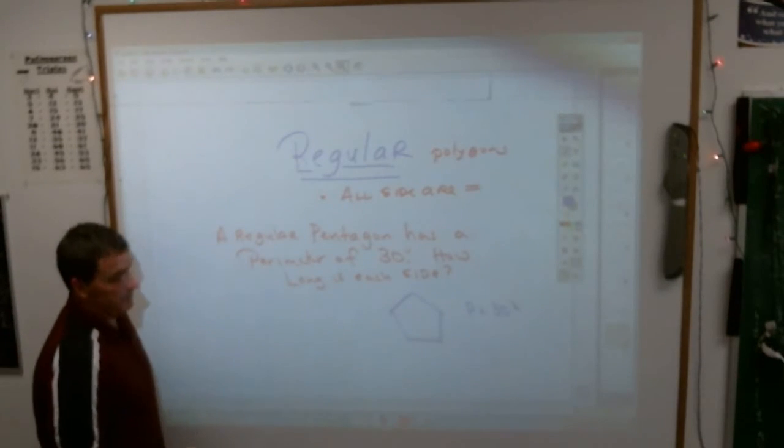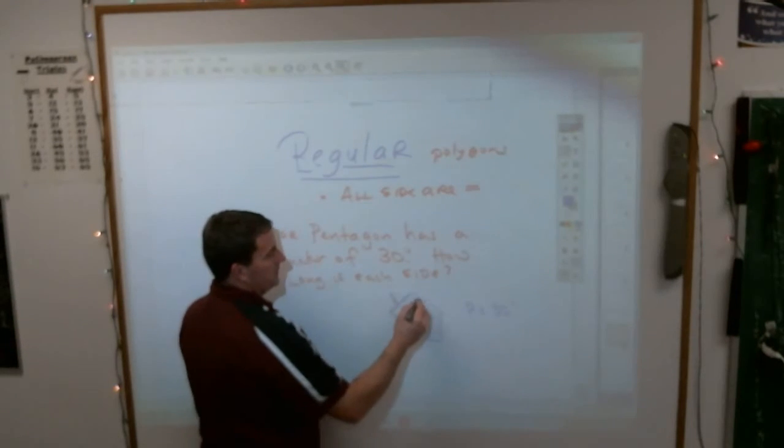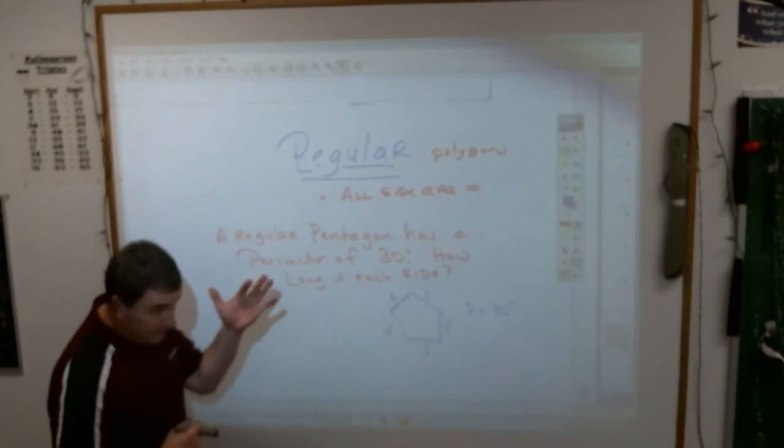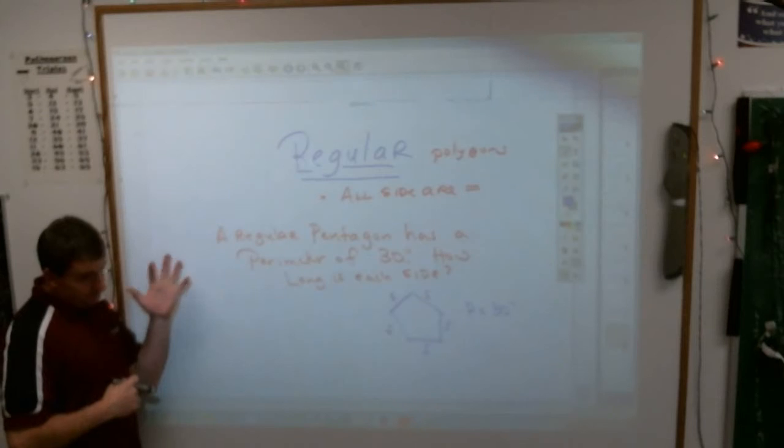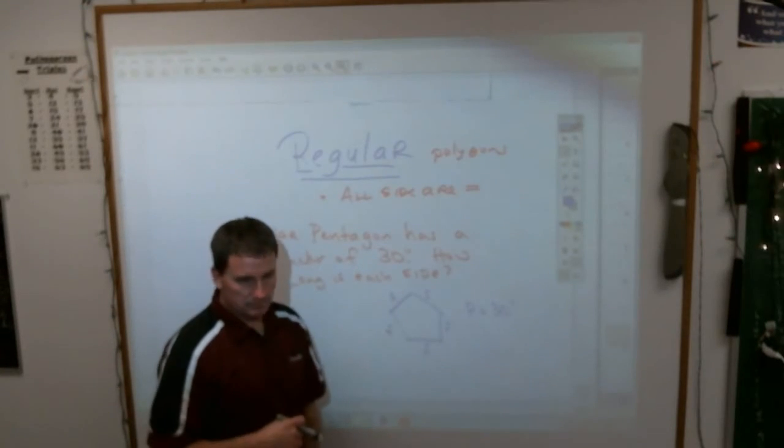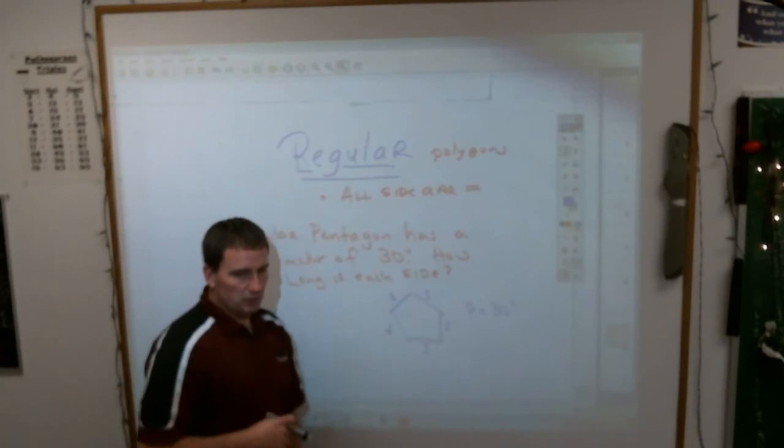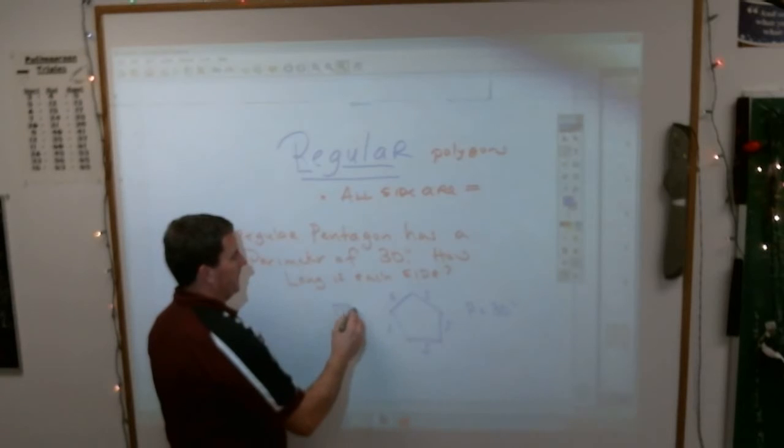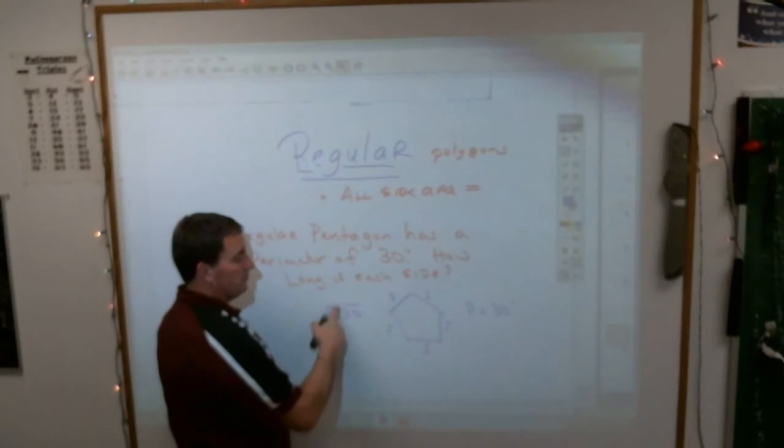Well, ladies and gentlemen, if every side has to be the same, and there are five of them, what number added to itself five times is going to give you 30? Wade, you get 6, right, which is 30 divided by 5. Now, 30 into five equal pieces.